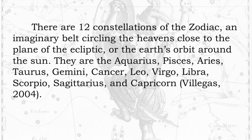There are 12 constellations of the zodiac — an imaginary belt circling the heavens close to the plane of the ecliptic, or the Earth's orbit around the sun. They are Aquarius, Pisces, Aries, Taurus, Gemini, Cancer, Leo, Virgo, Libra, Scorpio, Sagittarius, and Capricorn.